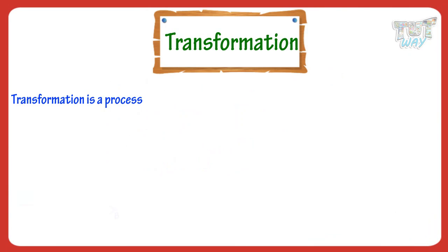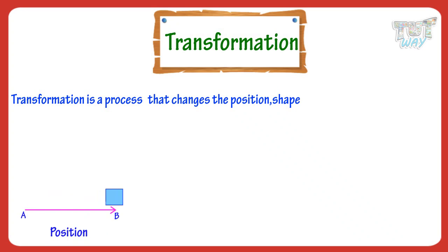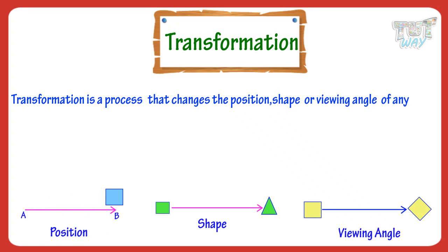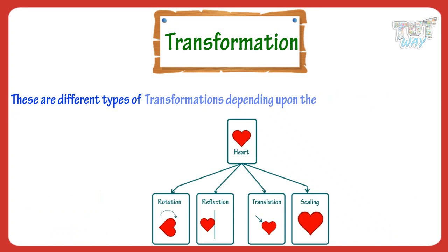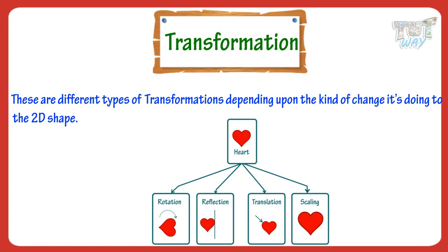First of all, we know that transformation is any process which changes the position, shape, or viewing angle of any shape. There are different types of transformation, depending upon the kind of change it's doing to the 2D shape.